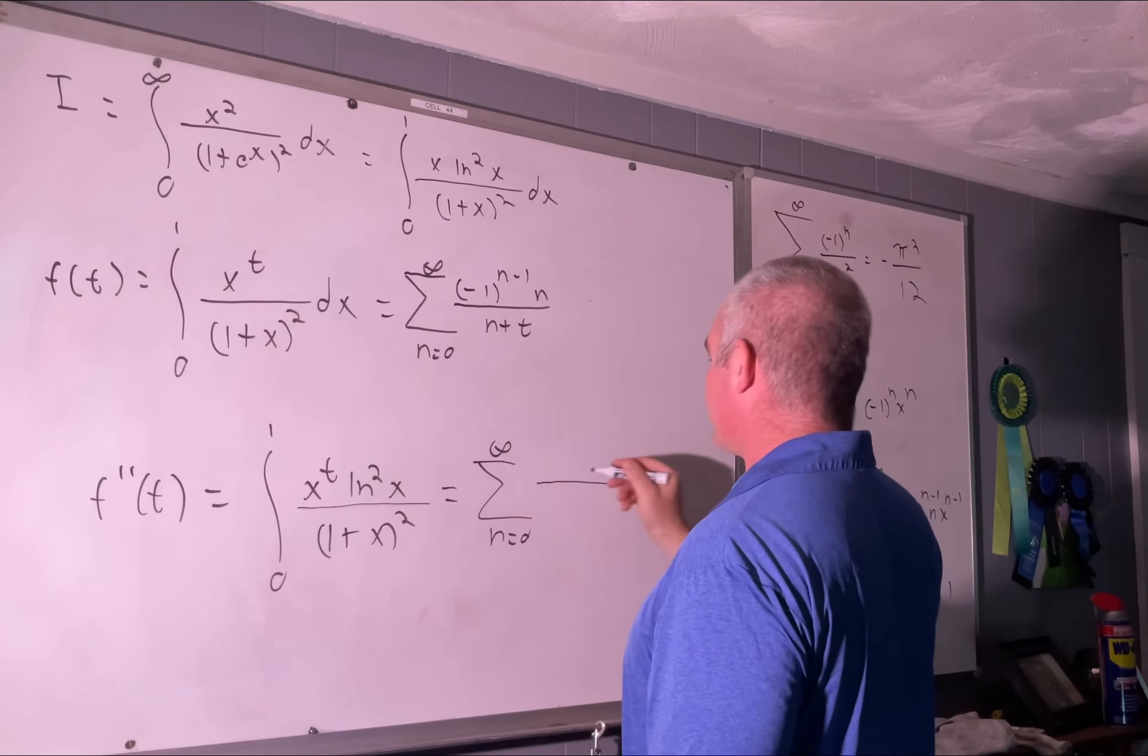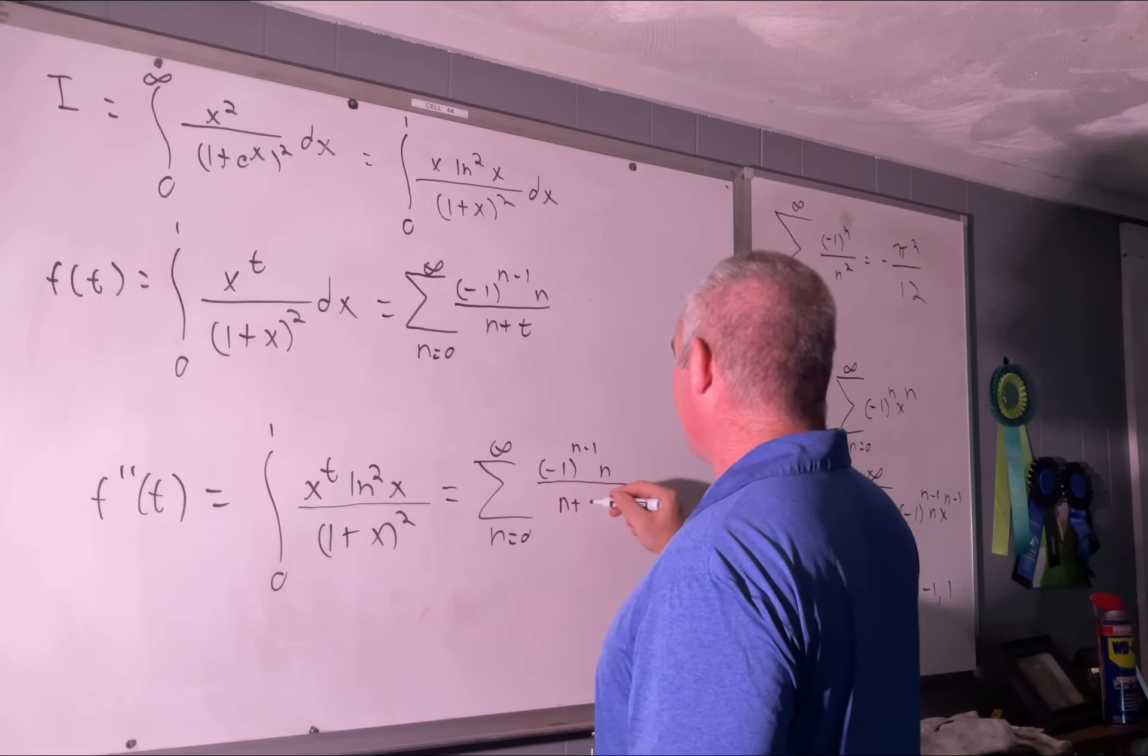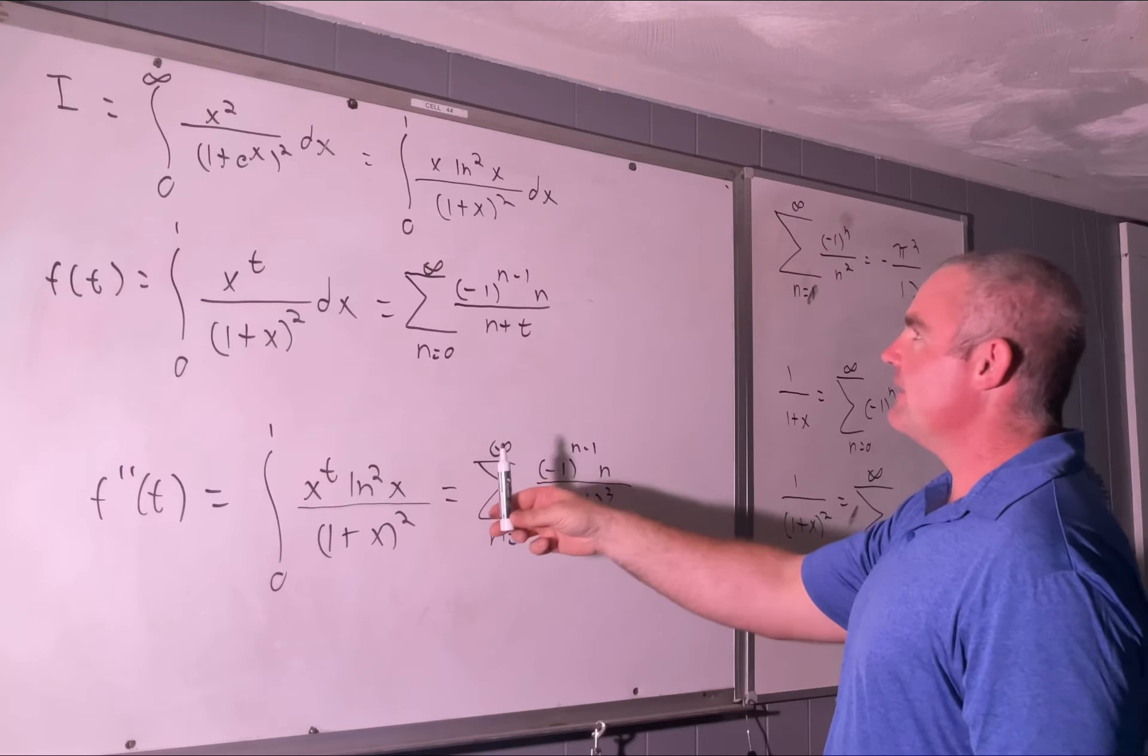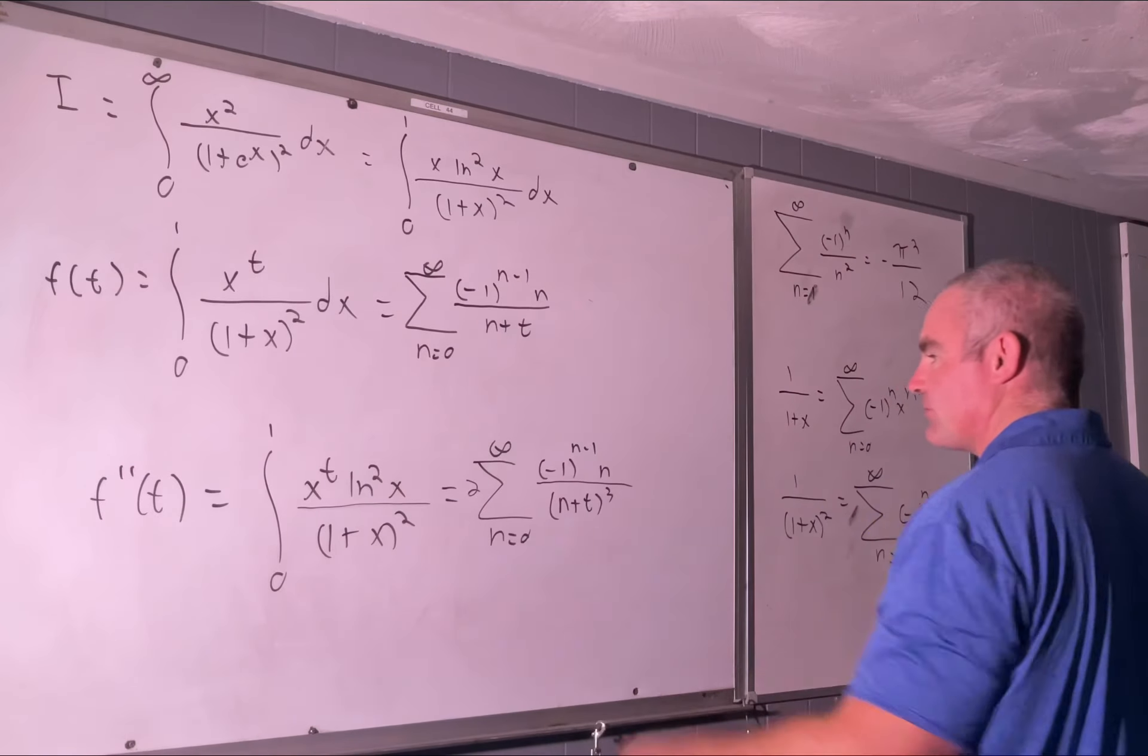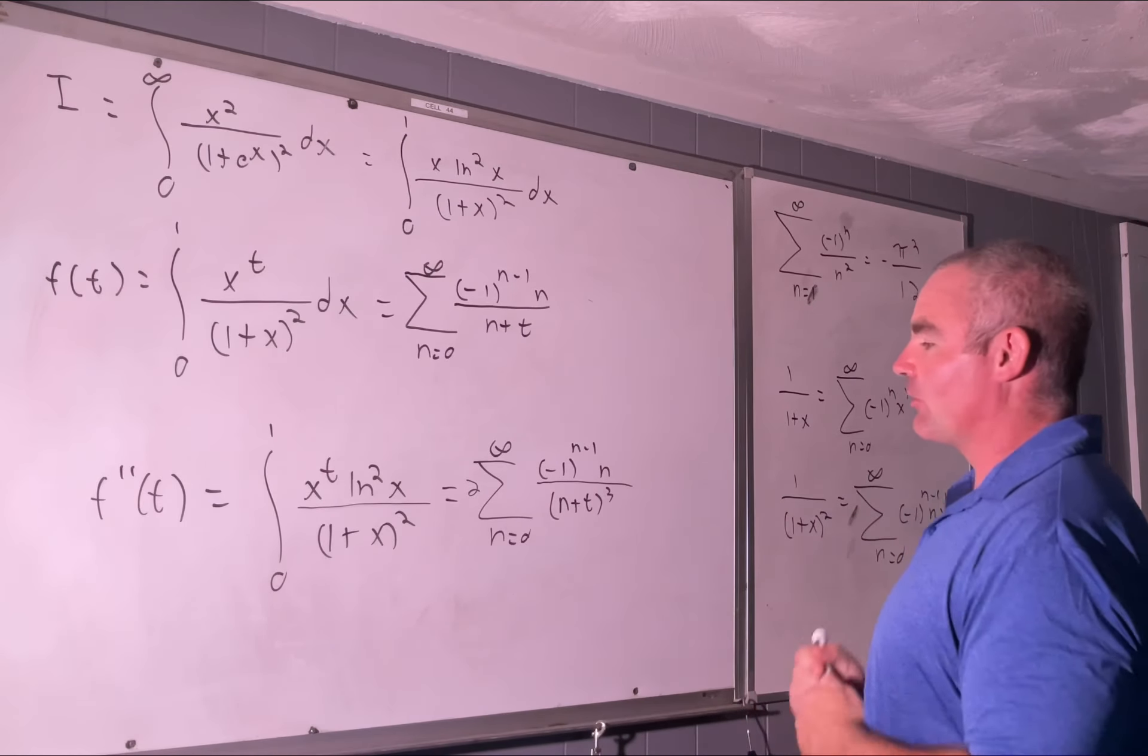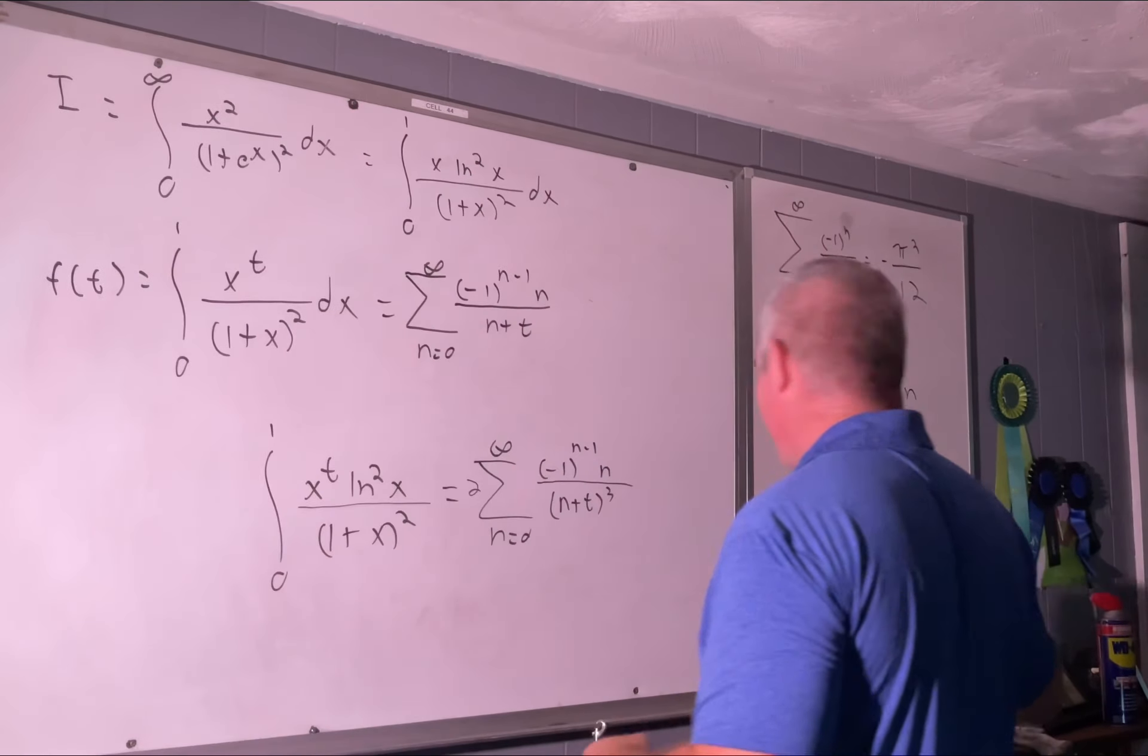We're going to have (-1)^(n-1) times n in the numerator, and in the denominator this will become (n+t)³ after taking two derivatives with respect to t. In our first derivative we'd recover a negative one, and our second we'd recover a negative two, making it just a positive two. So this is true, which means that f evaluated at the point 1 will hold for both of these. Let's plug in t=1 in both of these.